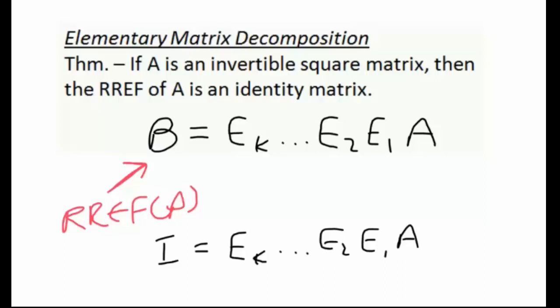So if the reduced row echelon form is an identity matrix, we can start with A, we can do a bunch of elementary row operations, and we'll eventually get to the reduced row echelon form, which is an identity matrix.